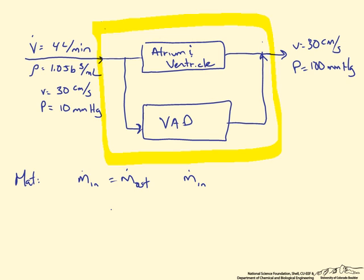Mass in is just going to be the density times the volumetric flow rate. In this case we are going to use 1.056 kilograms per liter. Multiply that by our 4 liters per minute. This gives us a mass flow rate of 4.22 kilograms per minute.